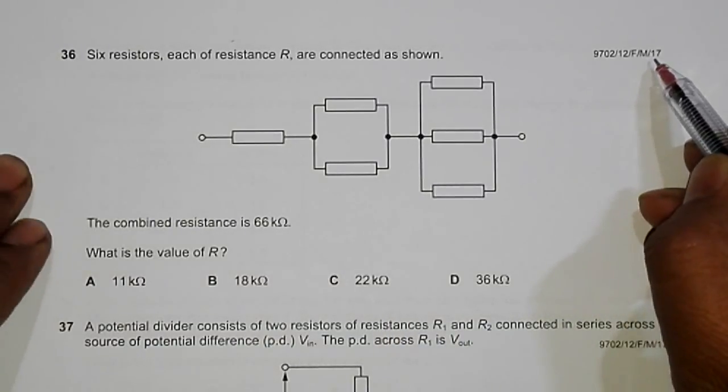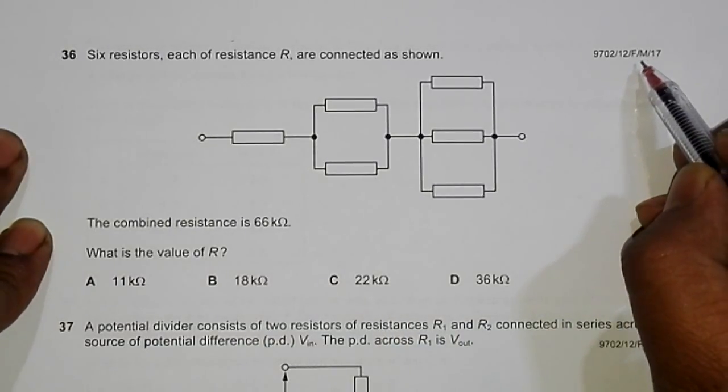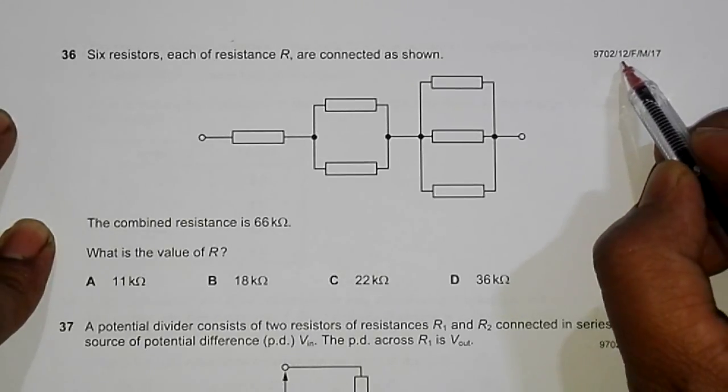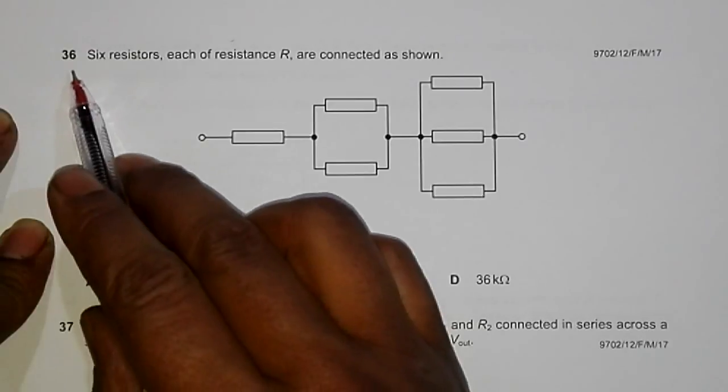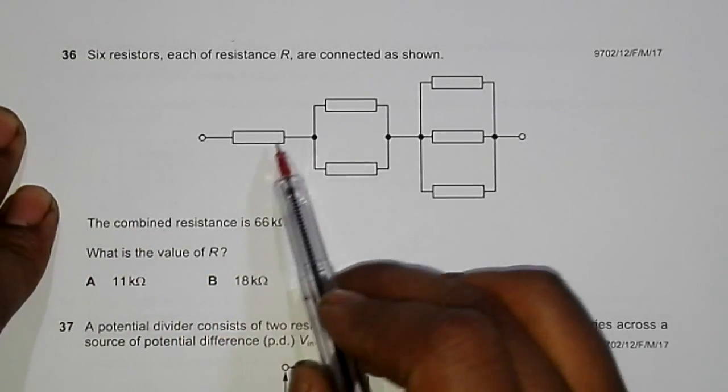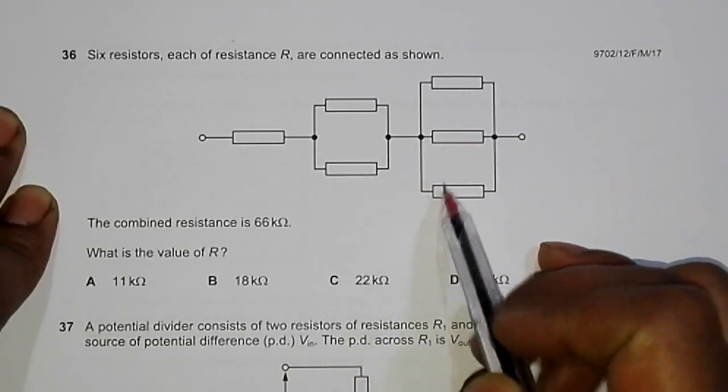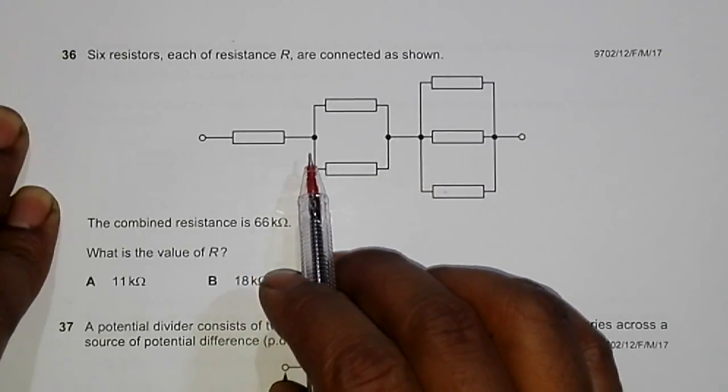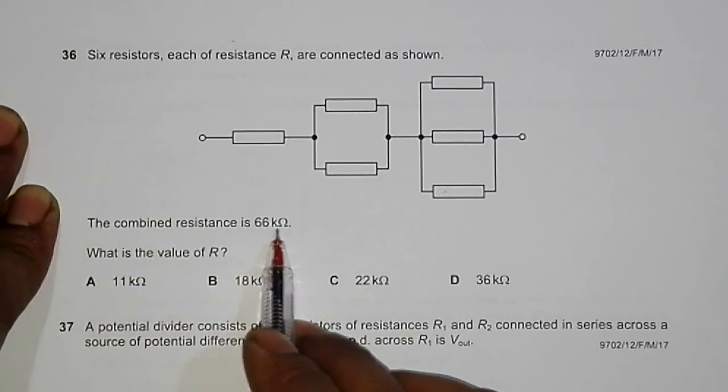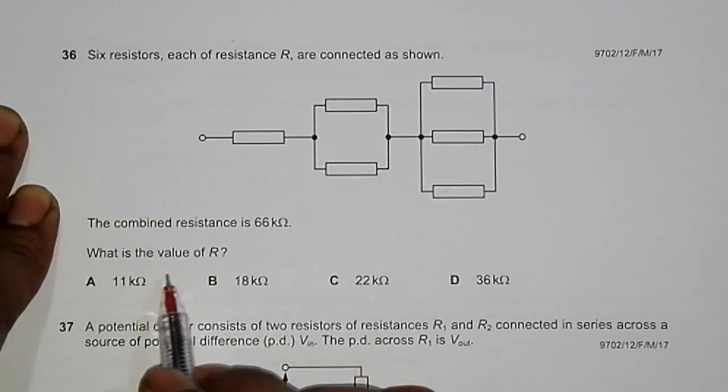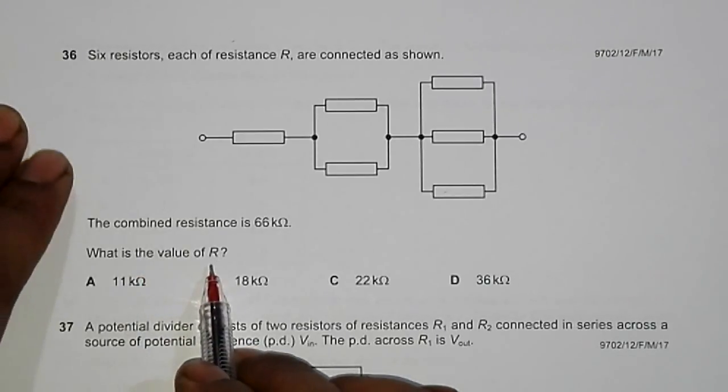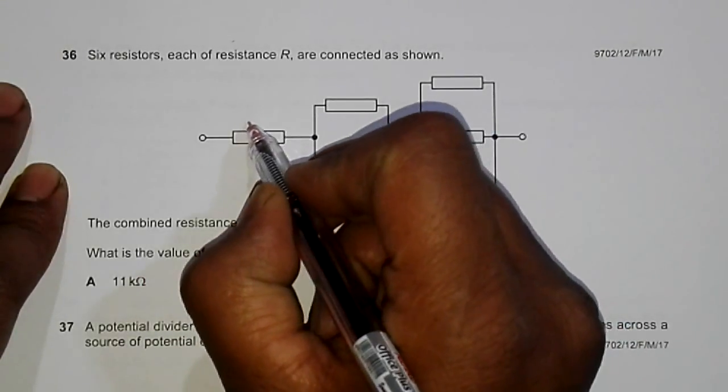This is question 36 from the 2017 February-March paper 1 variant 2. It has six resistors, each of resistance R, as connected. Their combined resistance is 66 kilo ohms, and we have to find the individual value of R.